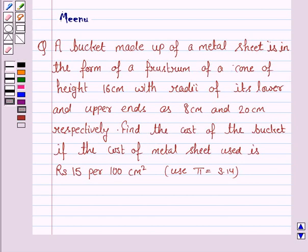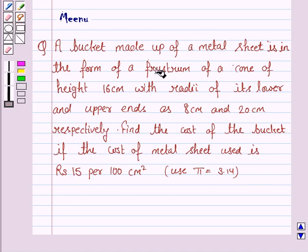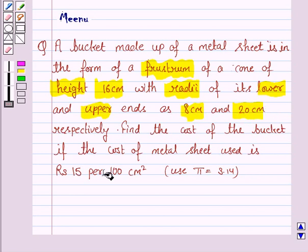Hello friends, let's work out the following problem. A bucket made up of a metal sheet is in the form of a frustum of a cone of height 16 cm, with radii of its lower and upper ends as 8 cm and 20 cm respectively. Find the cost of the bucket if the cost of the metal sheet used is rupees 15 per 100 cm².